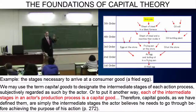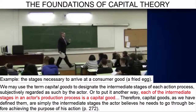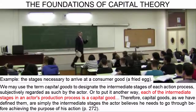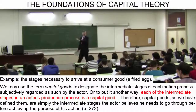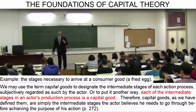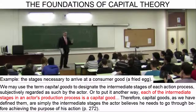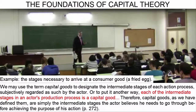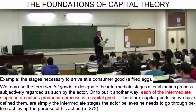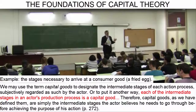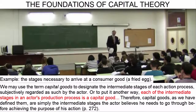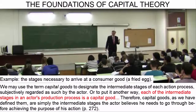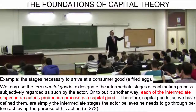And we can go even further back to recently extracted iron ore at the entrance of a mine. And we can go further back. Each of those intermediate stages takes the form of a capital good. The iron ore at the mine entrance is a capital good. The block of steel that comes out of the blast furnace is a capital good. The machine used to mold the frying pan is a capital good.